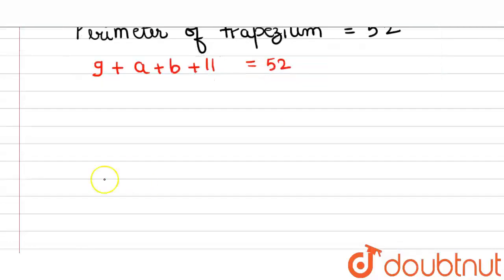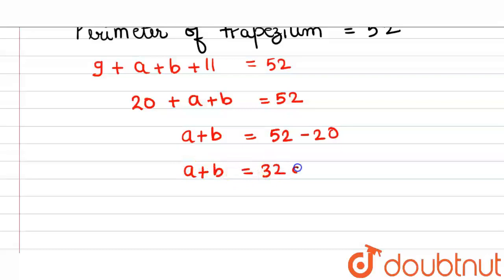So 9 plus 11 is my 20. So 20 plus A plus B is 52. So A plus B is my 52 minus 20. So A plus B is my 32 cm.